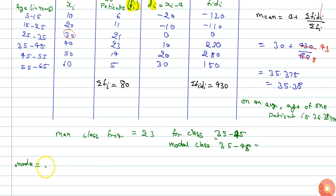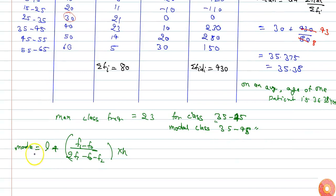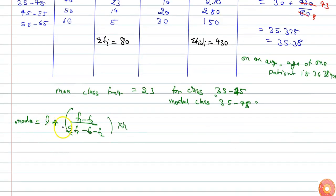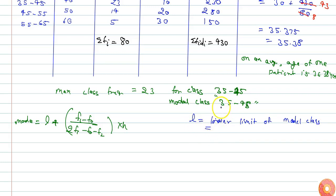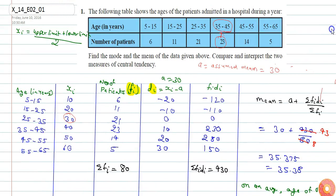The mode of any observation is given by: Mode = L plus (f1 minus f0) divided by (2·f1 minus f0 minus f2), multiplied by h. Here L is the lower limit of the modal class. The lower limit of the modal class is 35, since the modal class is 35 to 45. And f1 is the frequency of the modal class, which is 23.